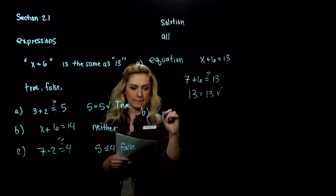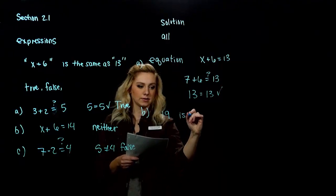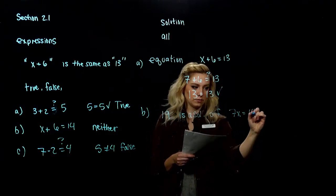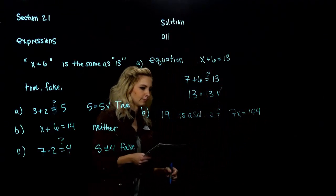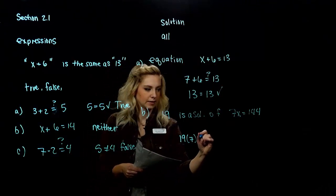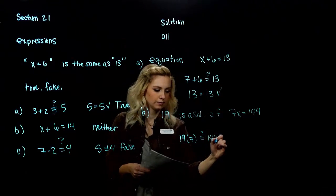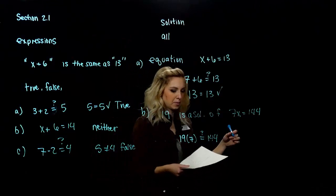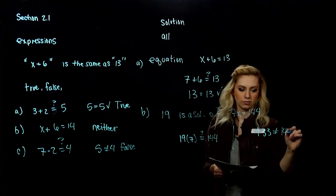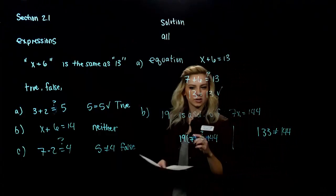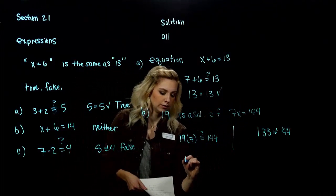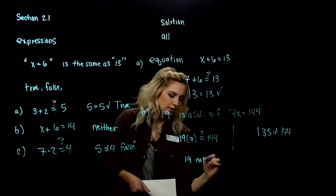Alright. So, that was the first one. Let's look at the second. Determine whether 19 is a solution of 7x equal to 144. Okay. So, 19 times 7, what is that giving us? Is that equal to 144? If you do the math, maybe off in the margin. We're looking at 133. That's not equal to 144. So, that tells me 19 is not a solution of this equation. So, 19 is not a solution.